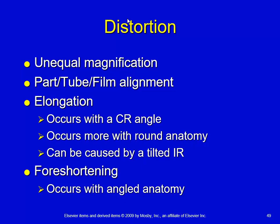Remember that magnification is an equal increase in size of an object — the whole object is magnified. Other types of distortion, elongation and foreshortening, are an unequal magnification. An increase in OID gives you an increase in magnification.